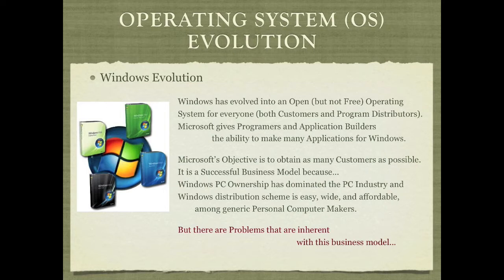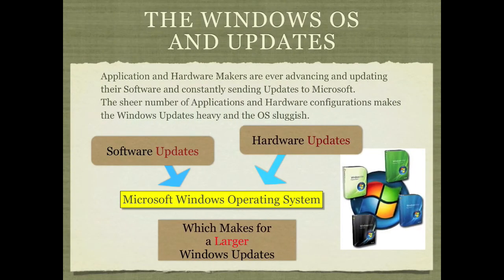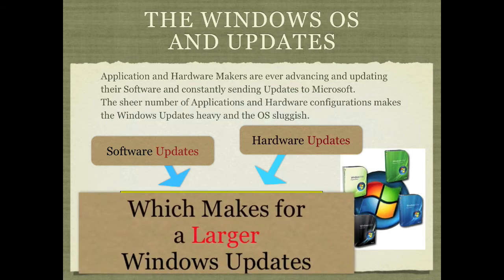But there are problems that are inherent with this business model. Application and hardware makers are ever advancing and updating their software and constantly send updates to Microsoft. The sheer number of applications and hardware configurations makes Windows update-heavy and the OS sluggish, which makes the Windows updates larger and larger.